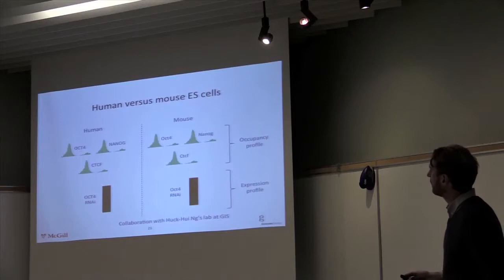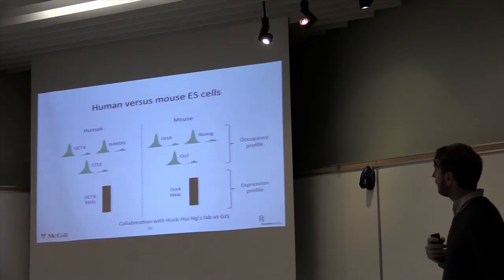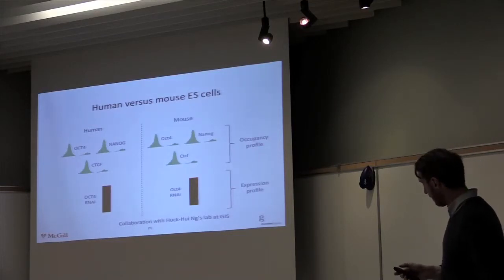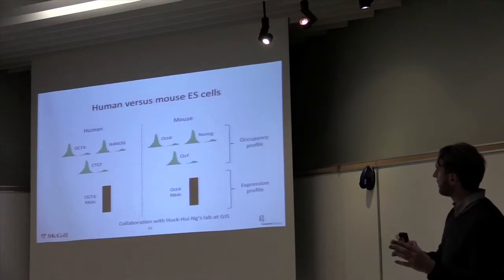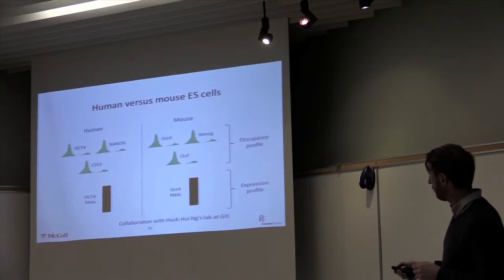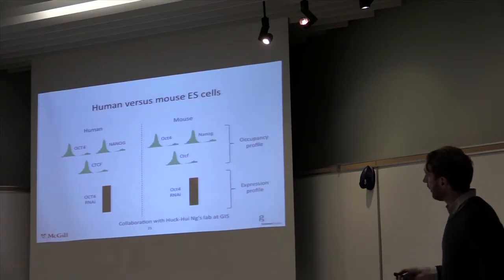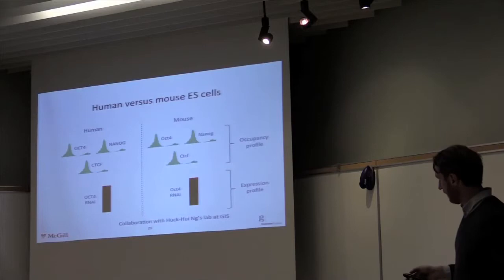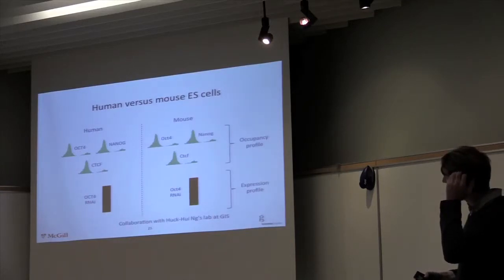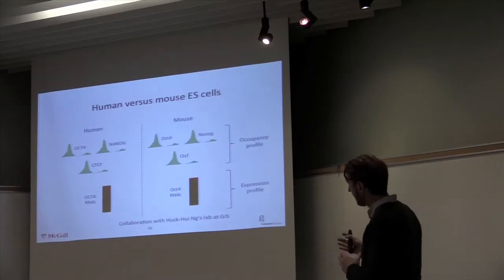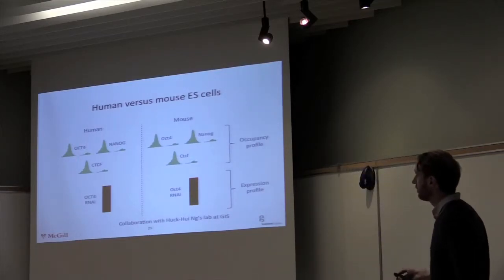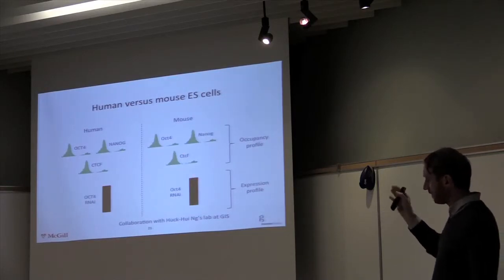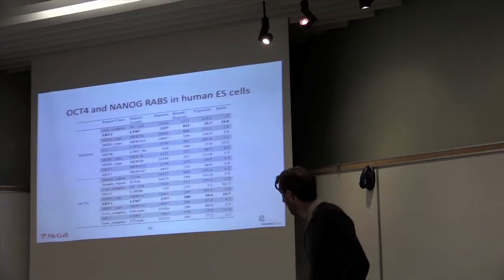One of the experiments we did — working in collaboration with a lab at the Genome Institute when I was in Singapore — was to compare ChIP-seq profiles from key stem cell transcription factors, Oct4, Nanog, CTCF, in both human and mouse ES cells, combined with expression data from microarray where we had knockdown of one of these factors, looking at how genes were deregulated — to see how different the regulatory network could be between human and mouse, and whether transposable elements are contributing to some of the differences between the two networks.